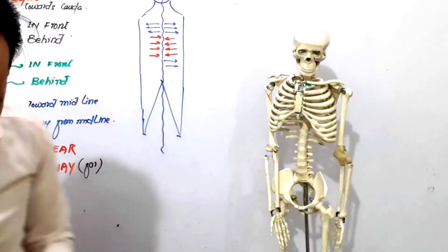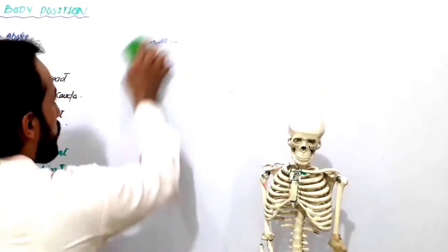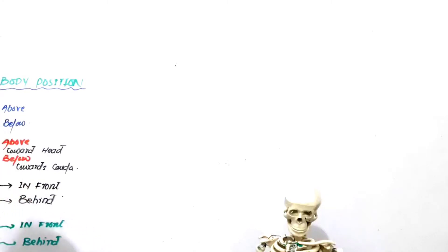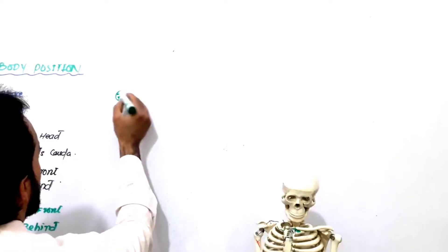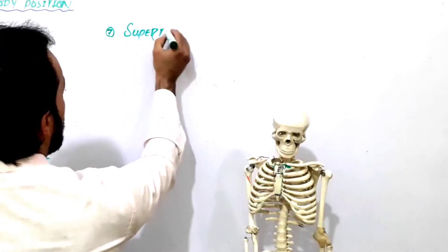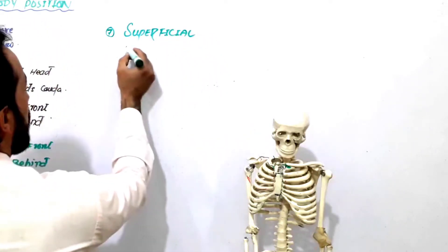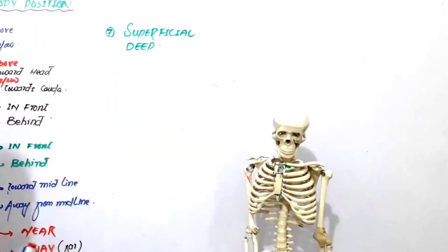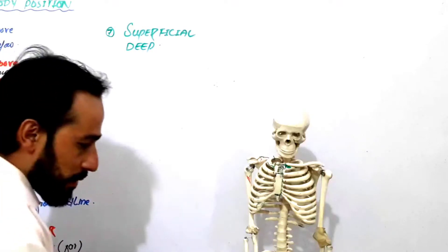Distal and proximal — clear. The next term we use is superficial and deep. The seventh important term related to body position is superficial and deep. What do these mean? Look carefully.